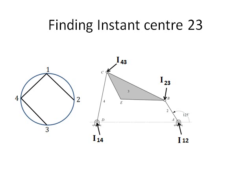We inspect the linkage. We can see that at B, link 3 connects to body 2. The pin fixes body 2 to body 3 and therefore the bodies have 0 relative velocity at this point. We have found an instant center. We label it I23 to represent the location of the instant center. Going back to the circle diagram, we can draw a line between 2 and 3 to represent this instant center.